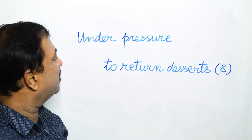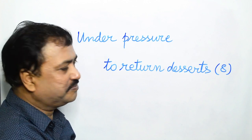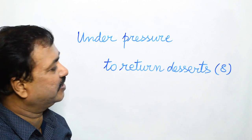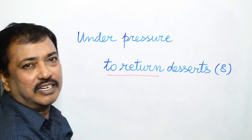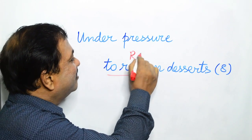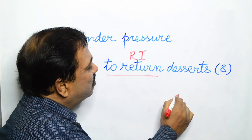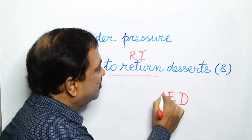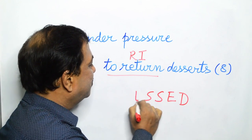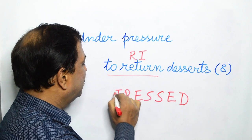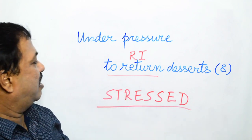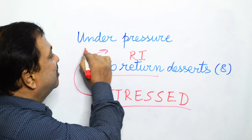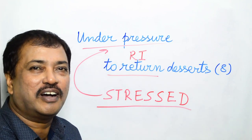Our ultimate clue: Under pressure to return desserts. Now desserts are sweet dishes served at the end of a meal, and to return obviously is the reversal indicator. So we write desserts from backwards, and what we get? We get the word stressed. And what is stressed? Stressed is another word for under pressure.